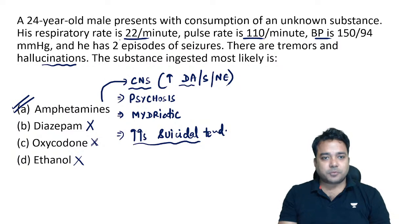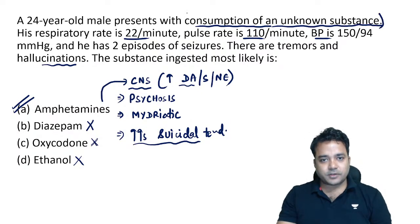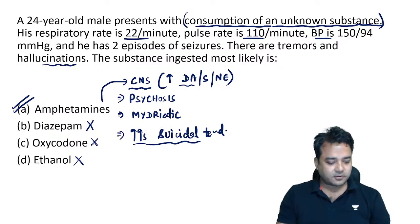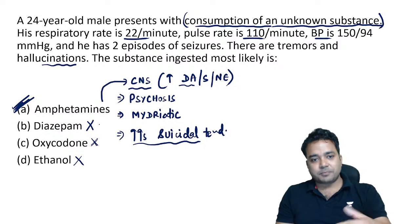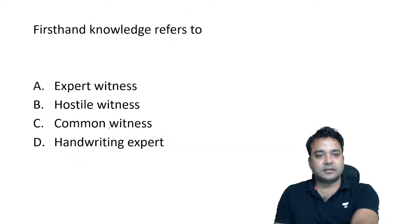The person has consumed some unknown substance. It is nowhere written that the person is an alcoholic who has left alcohol. So the answer has to be option A — amphetamine. This is a repeat UPSC CMS example.